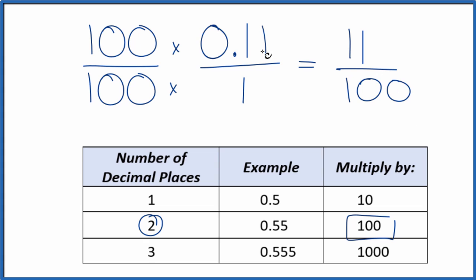0.11, the decimal, equals 11 over 100. And you can't reduce this any further. If you divide 11 over 100, you'll get 0.11. These are equal. They're just written in different formats.